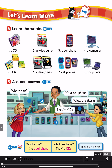Page 26 B. Ask and answer. What's this? It's a cell phone. What are these? They're CDs.